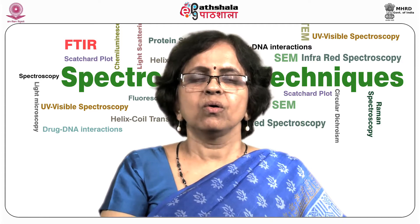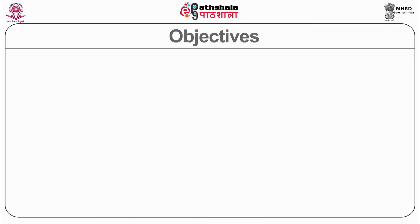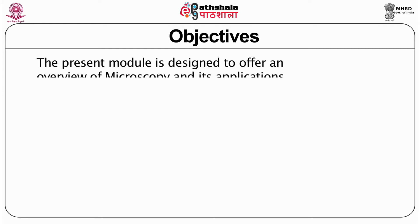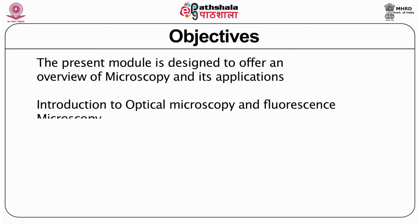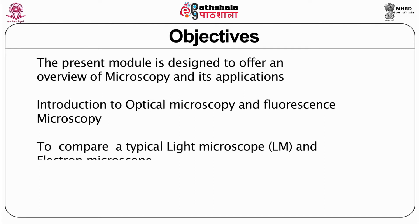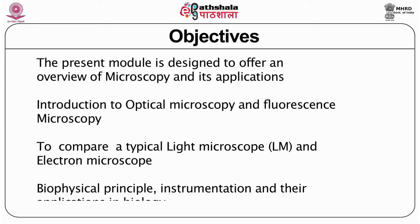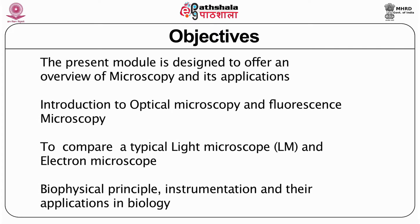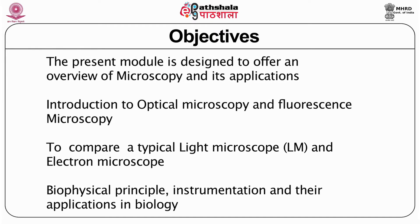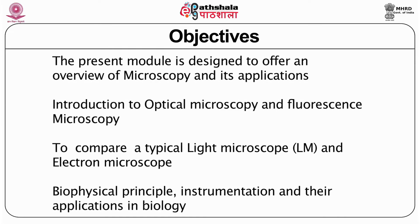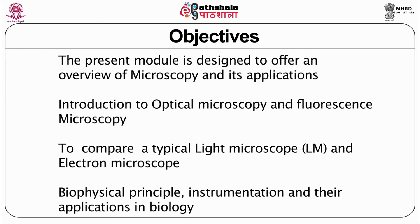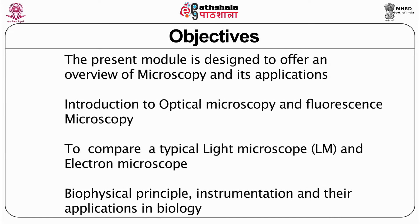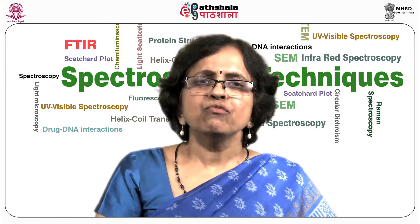This is Module 2 on the paper on biophysical techniques. The objectives of this module are to offer an overview of microscopy and its applications, introduce you to optical microscopy and a little bit about fluorescence microscopy. We will also compare how a typical light microscope differs from the electron microscope, and see what biophysical principle underlies the instrumentation design, as well as the applications of microscopy in biology.